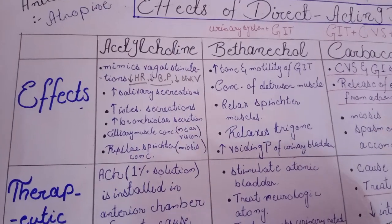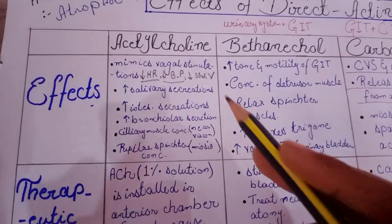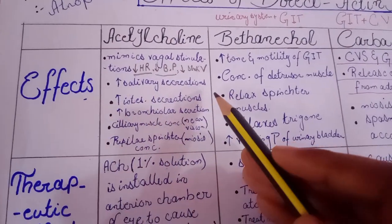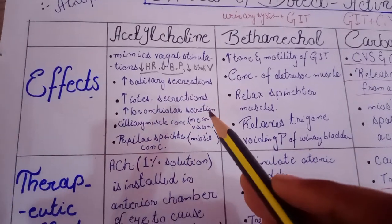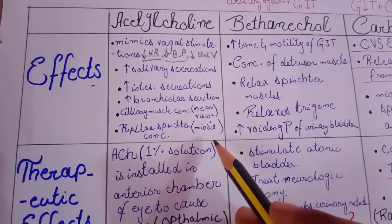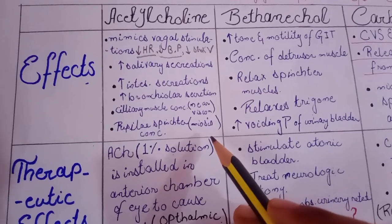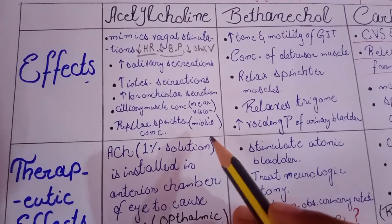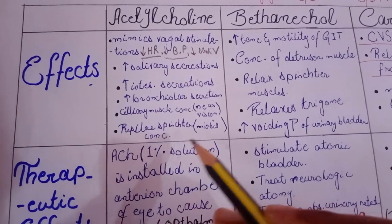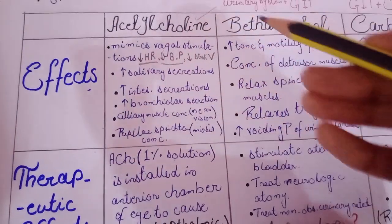Parasympathetic stimulation causes stimulation and secretion. In the same way, acetylcholine also causes increase in salivary secretion, increase in intestinal secretion, as well as increase in bronchial secretion. When iris sphincter muscles contract, it causes constriction of the pupil. Constriction of the pupil results in miosis, which is an effect of acetylcholine.